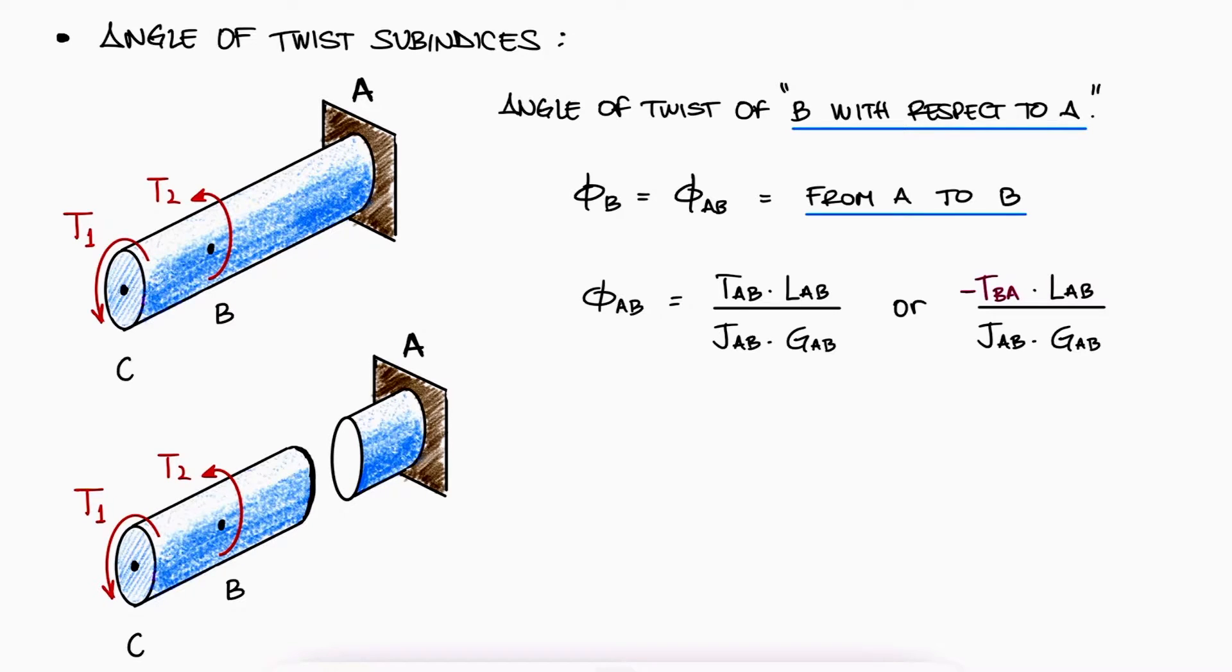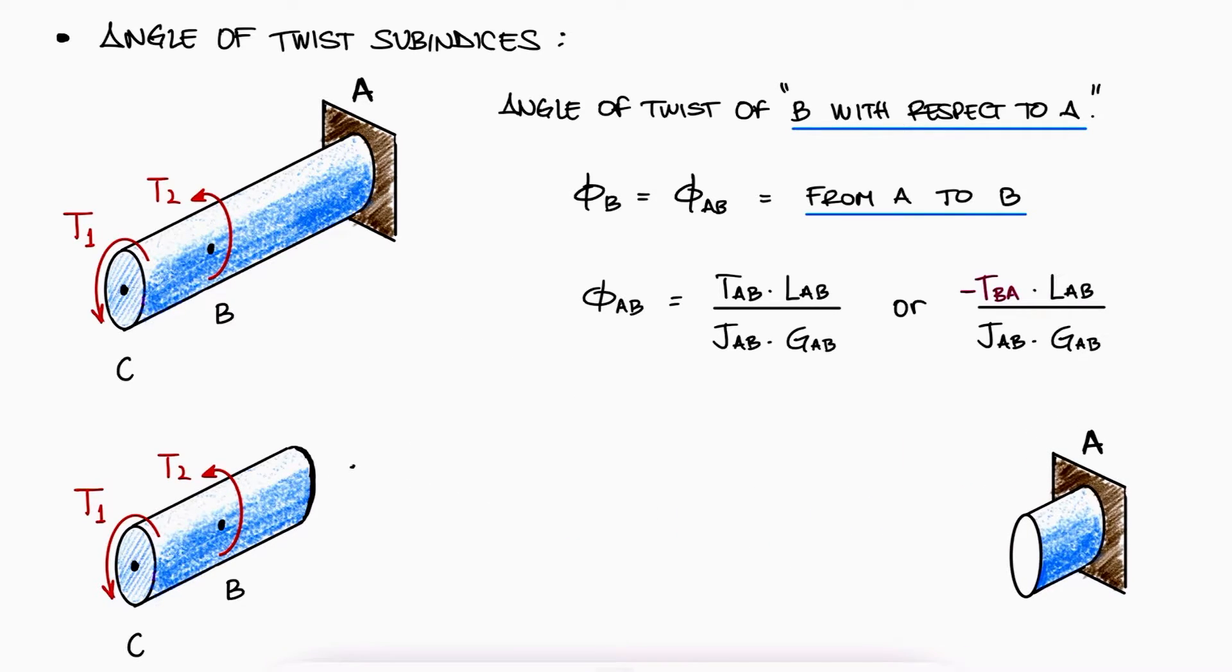If we perform a cut from C to somewhere between A and B so that we don't need to find the reaction torque at the wall A and only use the external torques, we would be finding TBA, because that is the torque from B to A.